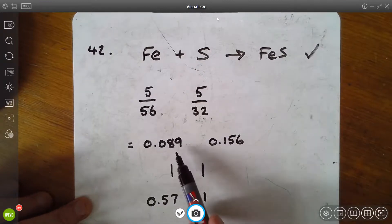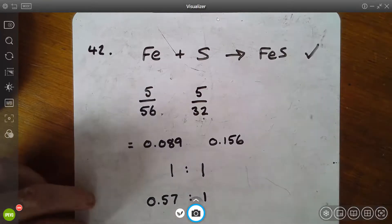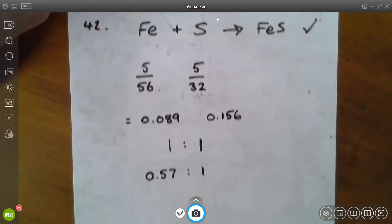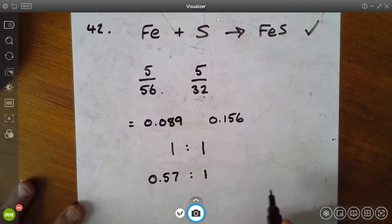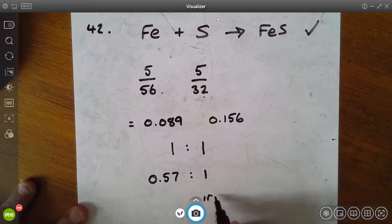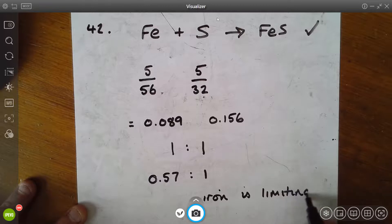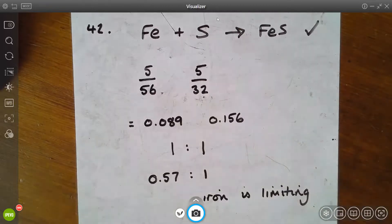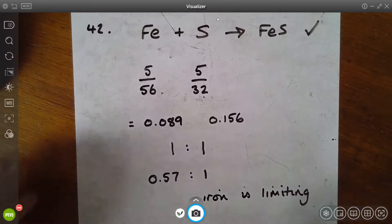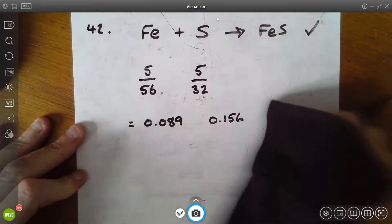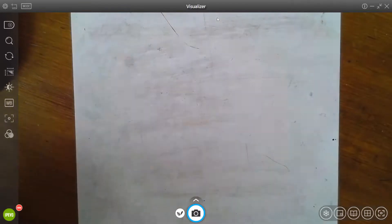However we do not have this ratio. Instead we have a ratio of 0.57 to 1. How have I got that? I've divided 0.089 by 0.156. So we end up with a ratio of 0.57 to 1. So that means we have less iron than we need given these masses, so we would say then that iron or Fe is the limiting reactant. And there's the working out for question 42. So purple pen now, that's how we work it out, nice and simply.